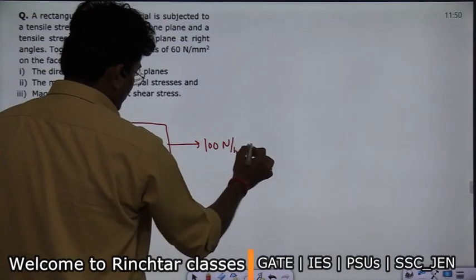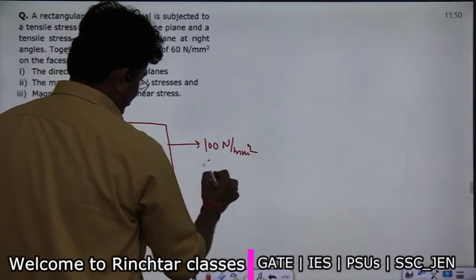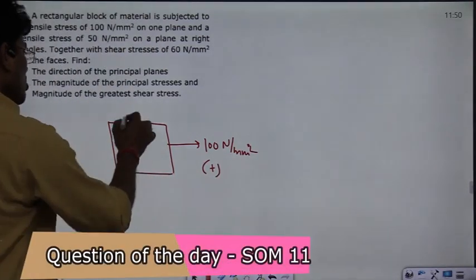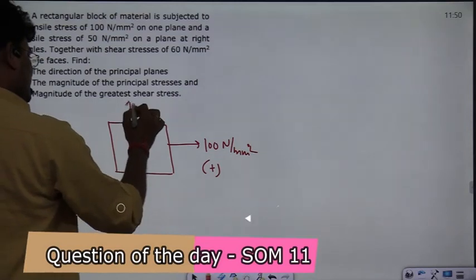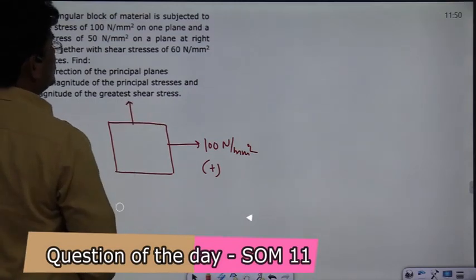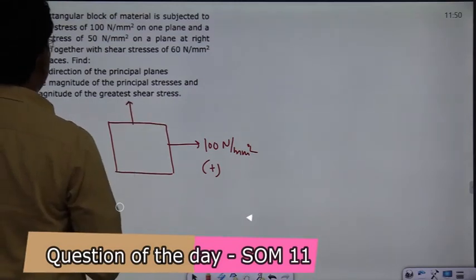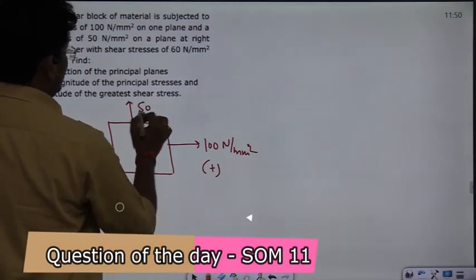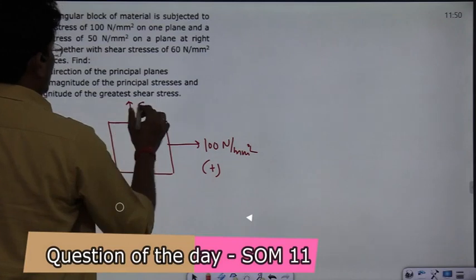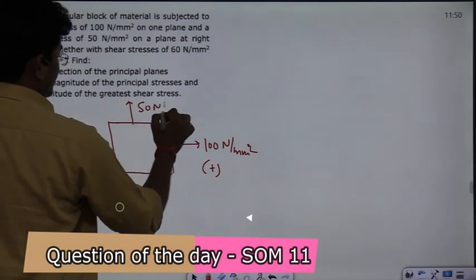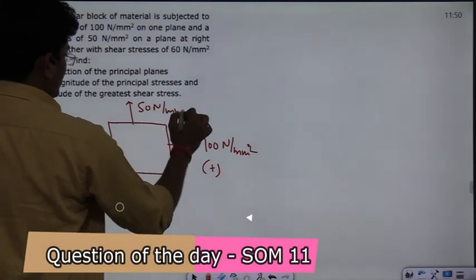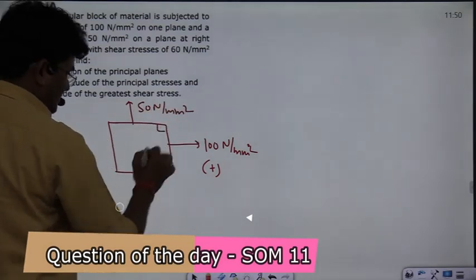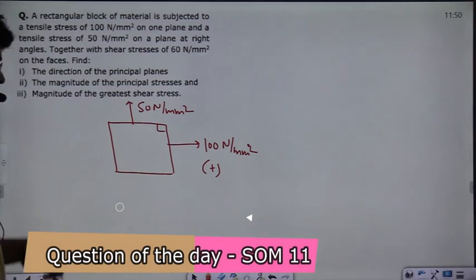What is the sign convention? It is positive. In the other plane, perpendicular to the tensile stress, it is 50 N/mm². In the opposite direction, they are 90 degrees apart.